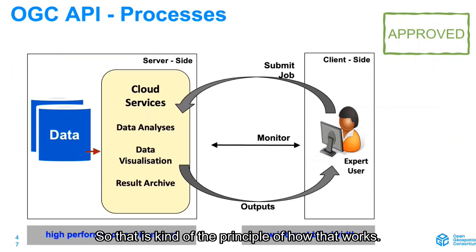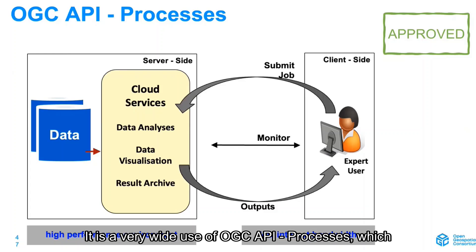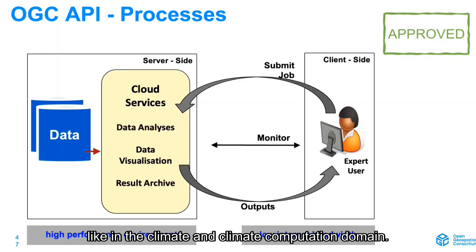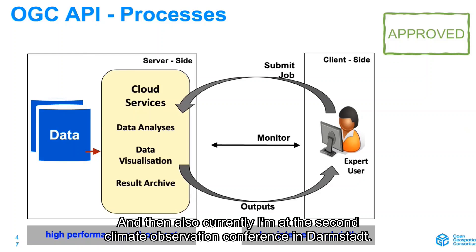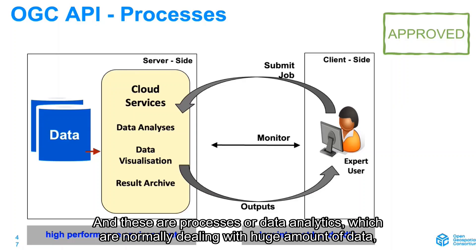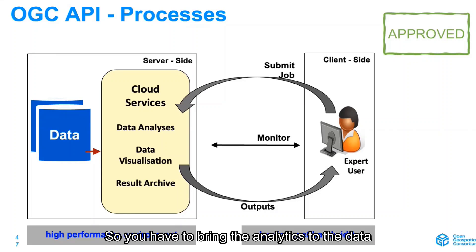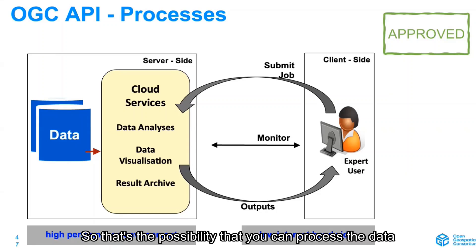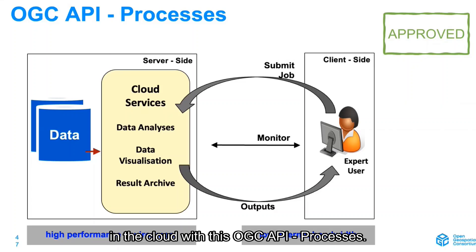That's the principle of how it works. OGC API Processes is very important, especially in the domain of climate and climate computation. These are processes and data analytics which are normally dealing with a huge amount of data that are not movable anymore, so you have to bring the analytics to the data — into the cloud services — instead of downloading the data. That's the possibility that you can process the data in the cloud with OGC API Processes.